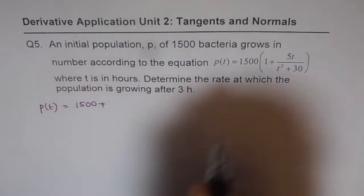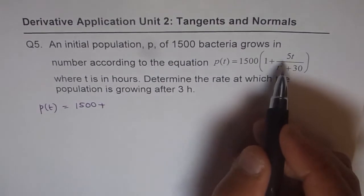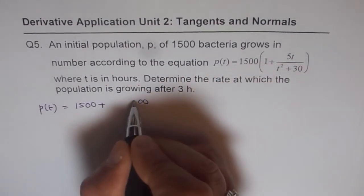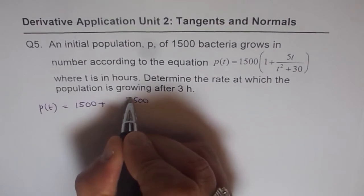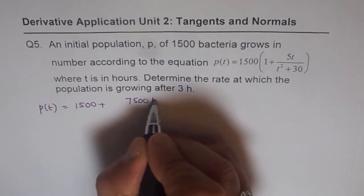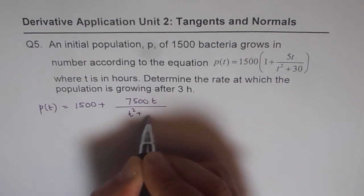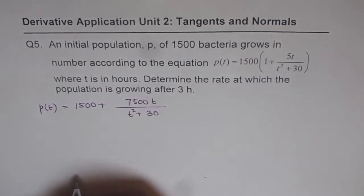So 1500 plus 1500 times 5, so 2 zeros. 5 times 5 is 25 and 2 plus 5 is 7. So 7500t over t squared plus 30. So that is what we get.